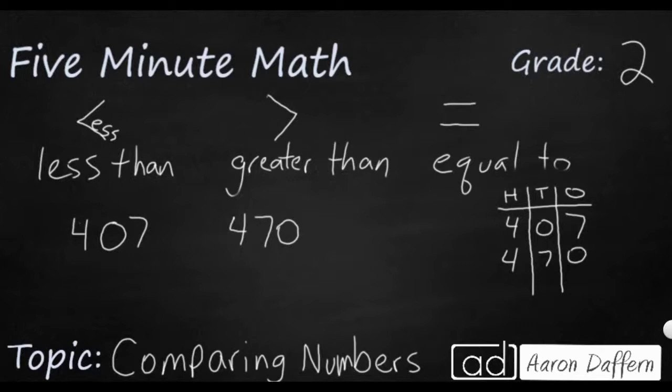As always, you begin with the largest place value of either number. In this case, both numbers have a digit in the hundreds place, four, but they're equal. So if your largest place value digit is the same with both numbers, then you need to look at the next largest place value. In this case, it is the tens place. That's where we see our difference. We have a zero and a seven. Our seven is larger than the zero.